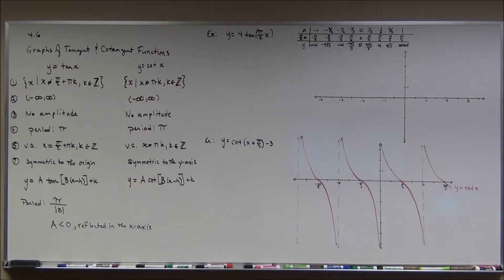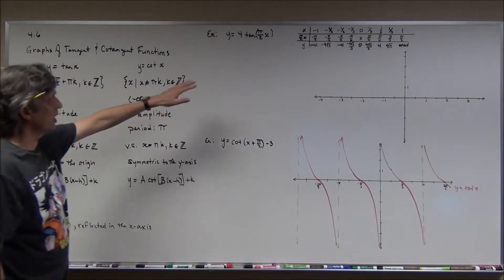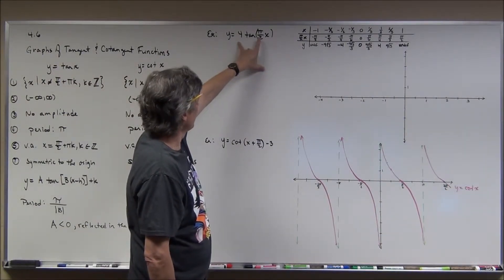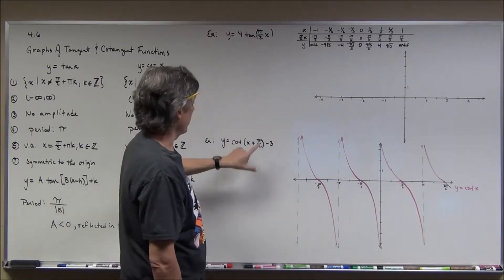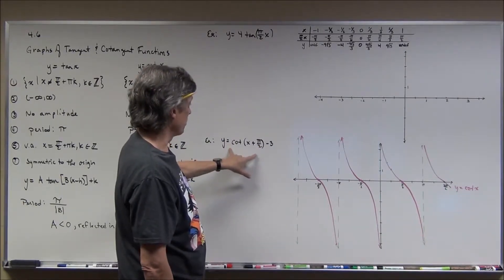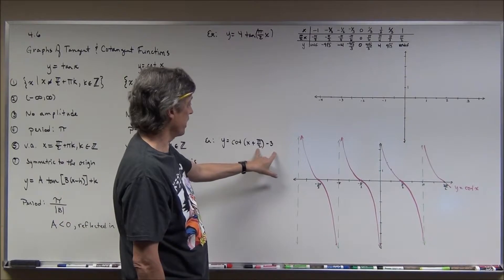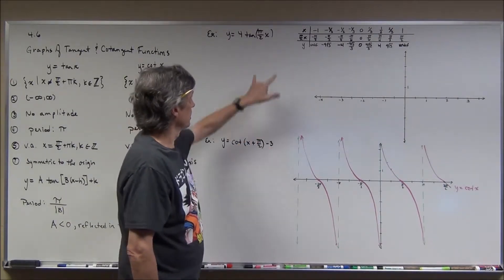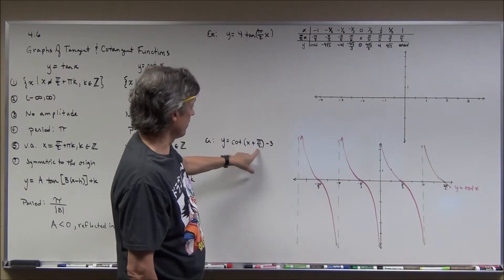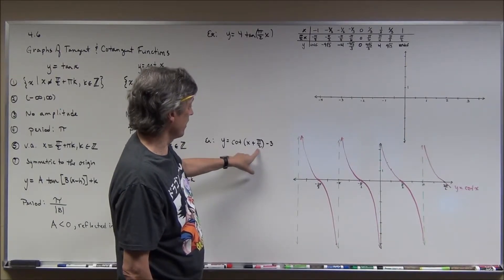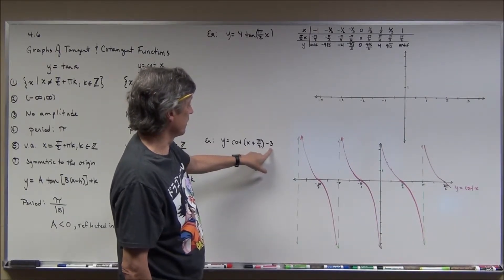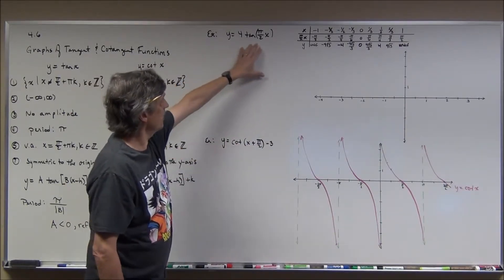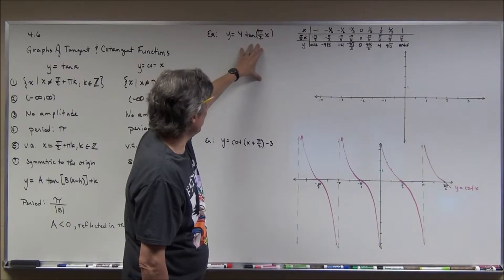I have two examples. The first is affected by dilations: a equals 4 and b equals π/2. The second example has a equals 1 and b equals 1, but h and k are nonzero — there's a phase shift of π/2 to the left and a vertical shift of 3 downward.